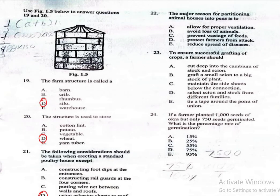Question 22. The major reason for partitioning animal houses into pens is to: A. Allow for proper ventilation, B. Avoid loss of animals, C. Prevent wastage of feed, D. Protect farmers from attack, E. Reduce spread of diseases. The correct answer is option E, reduce spread of diseases. Pens help in isolating sick animals and controlling the spread of contagious diseases.